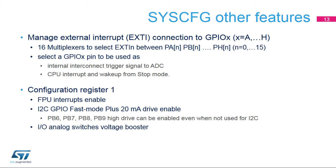The system configuration controller manages the selection of the GPIO to the external interrupt or event signal, which is used as asynchronous external interrupt or event with wake-up from stop capability. It also allows the selected GPIO pin to be used as an internal interconnect trigger signal to the ADC. Configuration register 1 contains the floating point unit interrupt control bits. It also contains the I2C fast mode plus 20 milliamp drive enable control bits. Four IOs can be configured with high drive mode even if they are not used as I2C alternate functions. They can be used to drive LEDs, for instance. The IO analog switch voltage booster is also selected here.